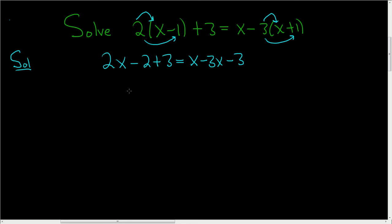Let's go ahead and combine like terms. On the left-hand side, we still have 2x. Negative 2 plus 3 is 1. This is equal to, we have x minus 3x. It's really a 1x. So 1 minus 3 is negative 2, and then minus 3.